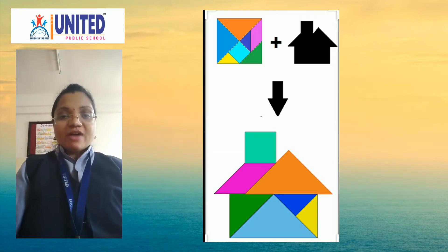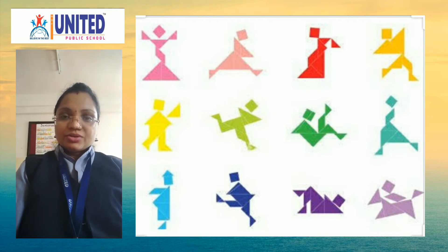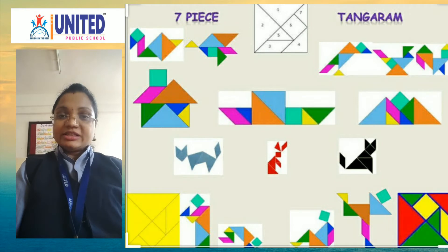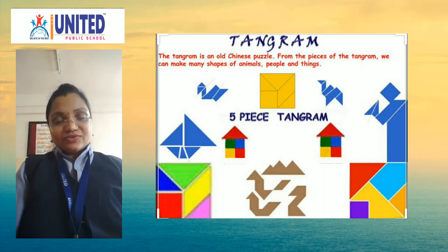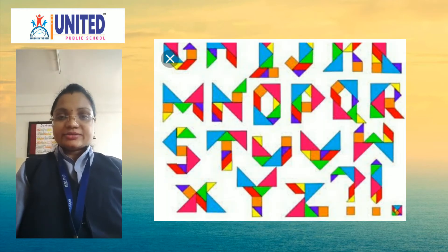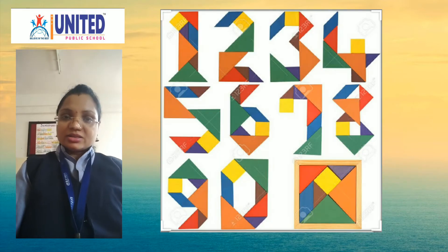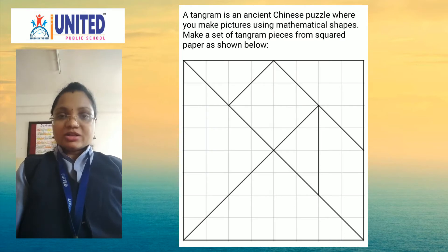We can make the picture of a house, also pictures of animals, and pictures of people. We have to make these pictures by adjusting the geometrical shapes in different ways — either 7 pieces or 5 pieces. We can also make the alphabets and numbers. So this is one kind of puzzle we can use for developing our brain.